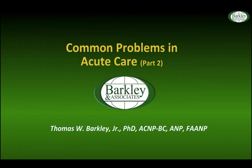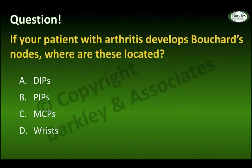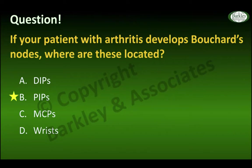We move into Common Problems in Acute Care Part Two. Let's start with some practice questions. If your patient with arthritis develops Bouchard's nodes, where are these located? The answer is B, the PIPs. This question was recently on the ANCC website — I changed it from Heberden's nodes to Bouchard's nodes — because sometimes there are just two lines and you have to know facts: you either know it or you don't.